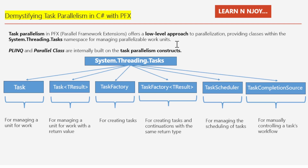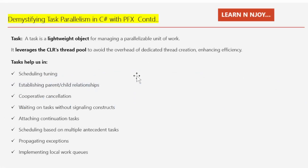You must be astonished to learn that PLINQ and the Parallel class are internally built on task parallelism constructed within the System.Threading.Tasks namespace. There are various classes such as Task, Task<TResult>, TaskFactory, TaskFactory<TResult>, TaskScheduler, and TaskCompletionSource. The Task class helps us manage a unit of work, whereas Task<TResult> is used for managing a unit of work with a return value. TaskFactory is for creating tasks, whereas TaskFactory<TResult> is used for creating tasks and continuations with the same return type. TaskScheduler helps manage task scheduling, while TaskCompletionSource gives us control for managing a task workflow manually.